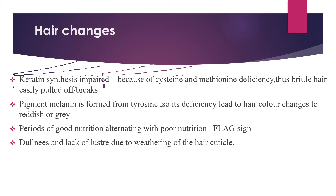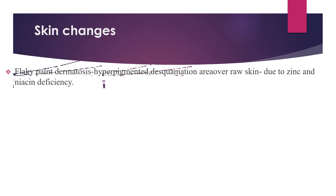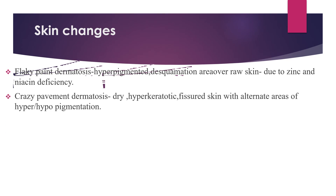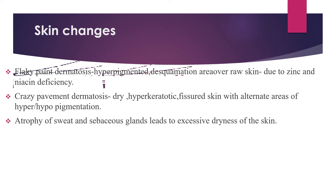Regarding skin changes, there may be flaky paint dermatosis with hyperpigmented and hypopigmented areas and desquamation over raw skin. This is thought to be due to zinc and niacin deficiency and free radical injury. Crazy pavement dermatosis — dry, hyperkeratotic, fissured skin with alternating areas of hyper- and hypopigmentation — can also occur in some malnourished children.